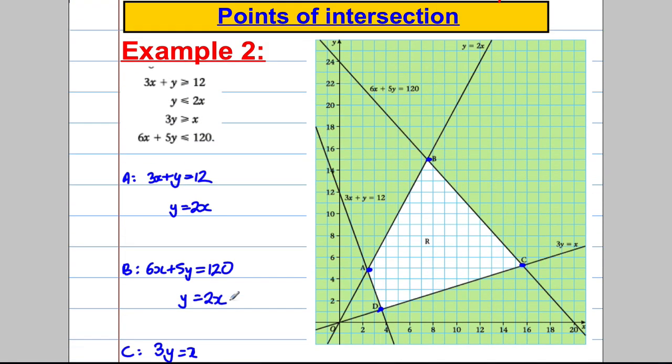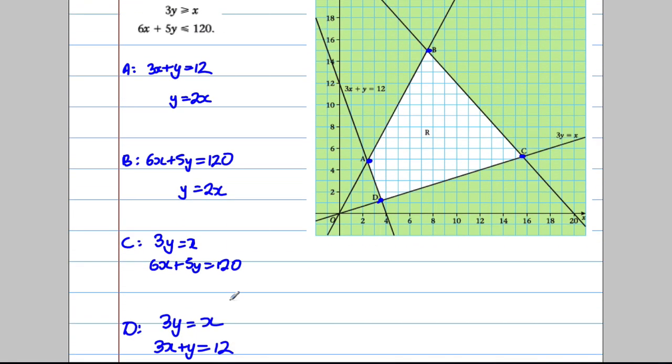Now, we can solve those with simultaneous equations, absolutely, but we could also use the calculator. So let's have a go at using the calculator. We want it of the form AX plus BY equals C for each of the equations. The number of X's first plus the number of Y's equals a number. So here, this is fine. I want the X's first, so I'm going to write that's 2X subtract Y is equal to 0. So I've converted that into that form. This one's fine. 6X plus 5Y is equal to 120. This one, I could write that as 2X subtract Y equals 0.